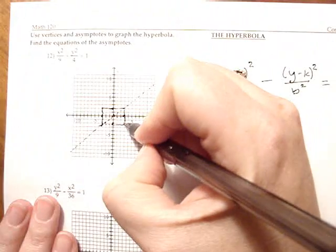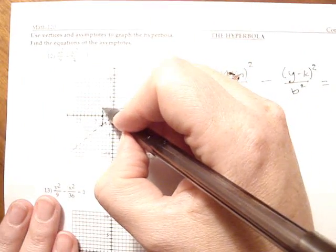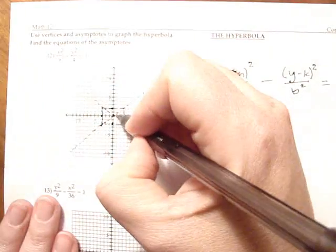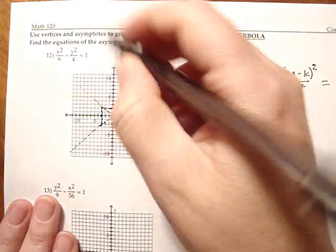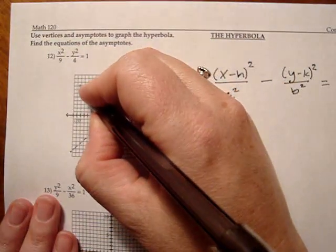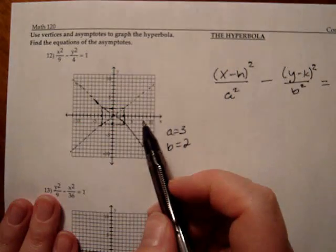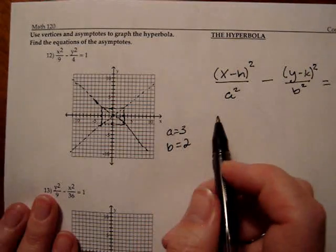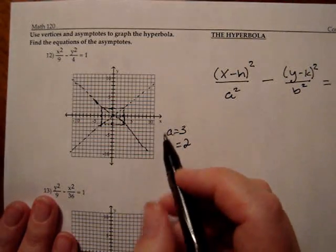and they extend like this. So notice my diagonals go from corner to corner through the center. And these are the guides for the hyperbola. This determines the shape. Let's make this one better. And these are called slant asymptotes. Now, remember I may be saying that word wrong.